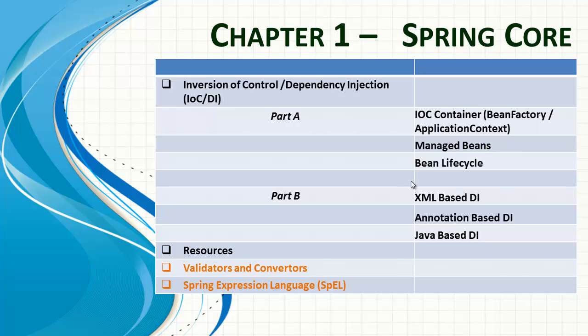We'll further look at validators and converters, and the Spring Expression Language. The reason the last two topics are in a different color is because the course is divided into two levels. Anything in black is covered in Level 1, and anything in orange is covered in Level 2. So validators, converters, and Spring Expression Language will be covered in Level 2.